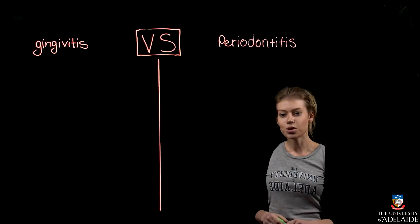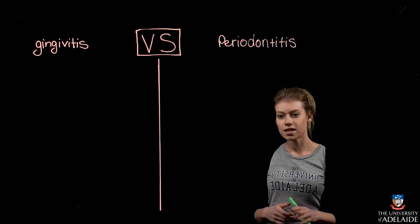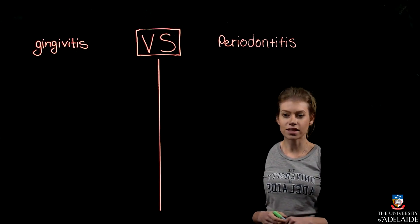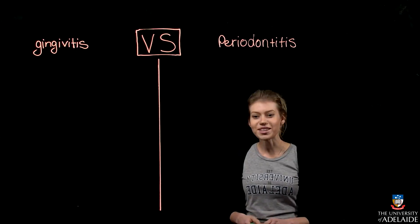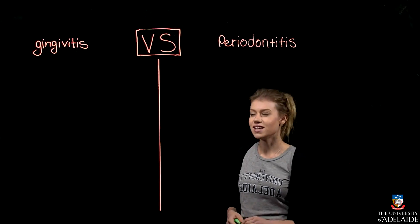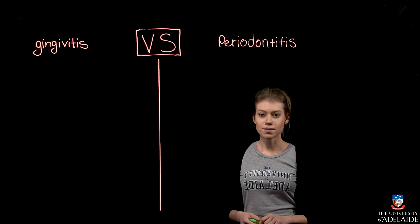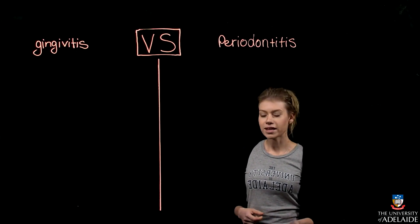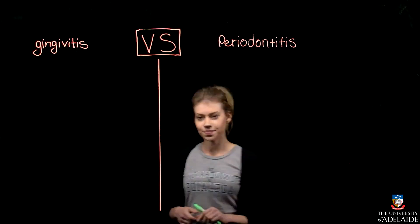We're going to talk about the difference between gingivitis and periodontitis, and how you can differentiate between the two. In gingivitis, the junctional epithelium becomes laterally displaced, there is pseudo-pocketing, but there is no attachment loss.